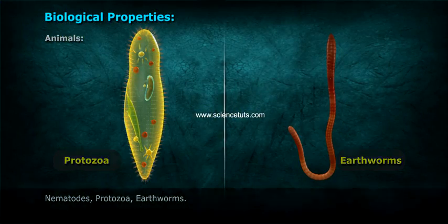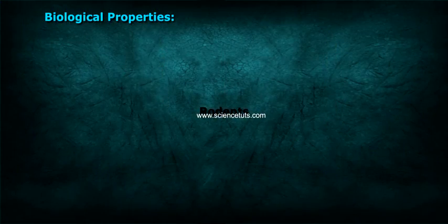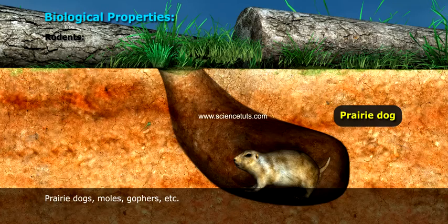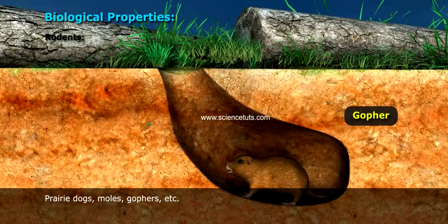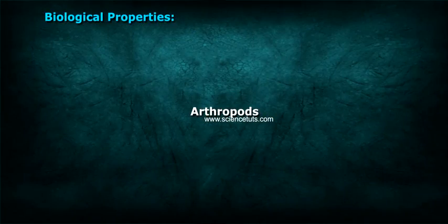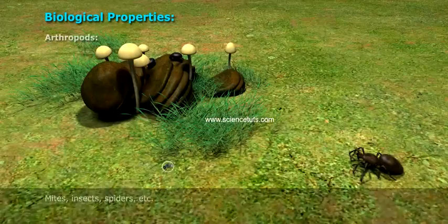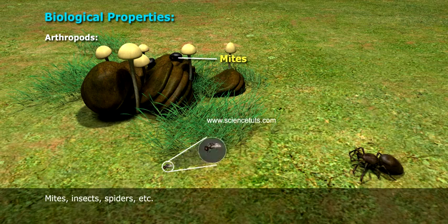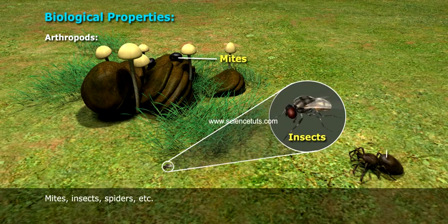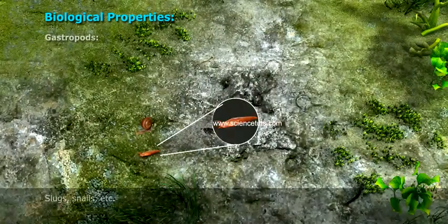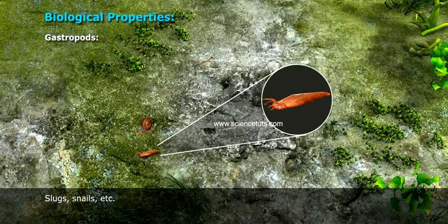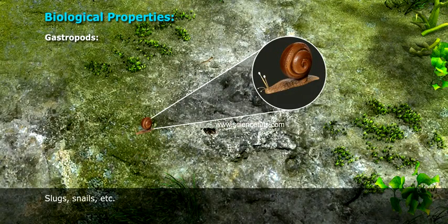Macro organisms include roots of higher plants, VAM fungi, and animals such as Nematodes, Protozoa, Earthworms, Rodents (prairie dogs, moles, gophers, etc.), Arthropods (mites, insects, spiders, etc.), and Gastropods (slugs, snails, etc.).